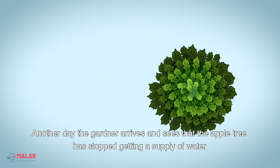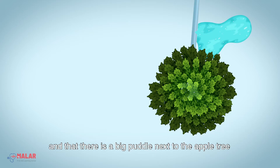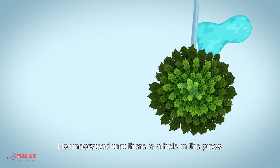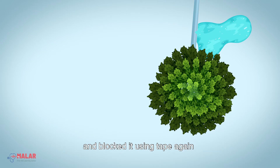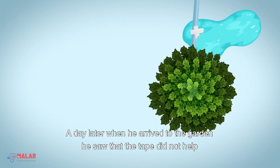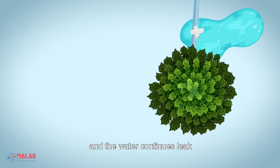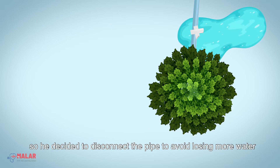Another day the gardener arrived and sees that the apple tree has stopped getting a supply of water, and that there is a big puddle next to the apple tree. He understood that there is a hole in the pipes and blocked it again using tape. A day later when he arrived to the garden he saw that the tape did not help and the water continued to leak, so he decided to disconnect the pipe to avoid losing more water.